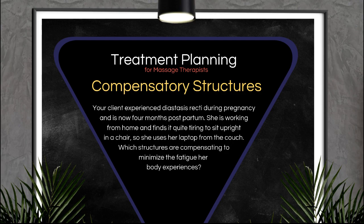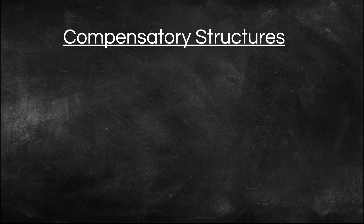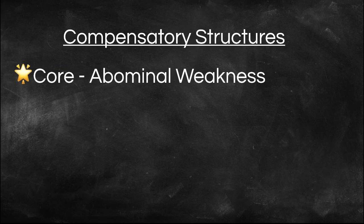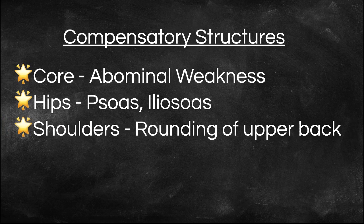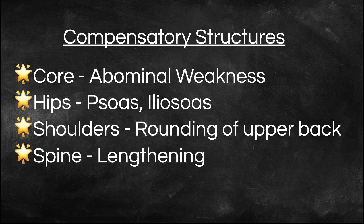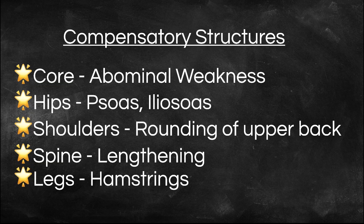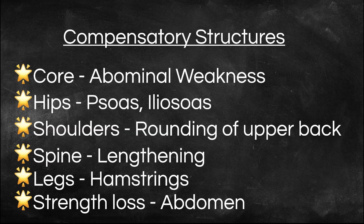Scenario number five: your client experienced diastasis recti during pregnancy and is now four months postpartum. She's working from home and finds it quite tiring to sit upright in a chair, so she uses her laptop from the couch. The compensatory structures include the core — abdominal weakness. The hips — psoas and iliopsoas are engaged. Shoulders are rounding while she lies down. Her spine is being lengthened and stretched out while she sits on the couch. The hamstrings are probably curled up far more than they would be in a chair, so we're seeing a shortening of the hamstrings. We may also see a general loss in muscle tone through the core, which we know was already not strong.